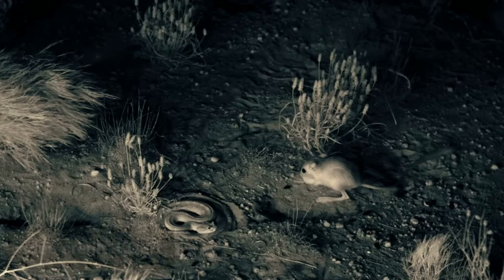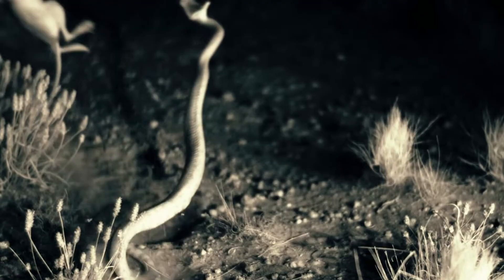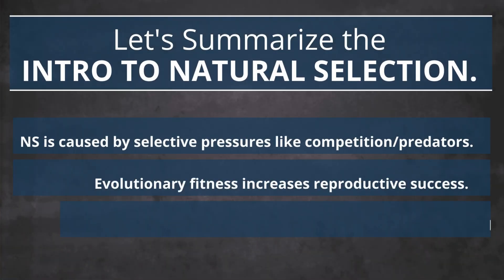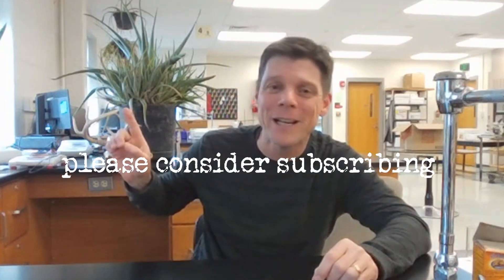Scientists have studied the genetics of fur color of rock pocket mice extensively, and we will do a number of activities throughout the year to explore how genetic variation in these animals can be selected in different generations as conditions in their habitat may change. The desert is a tough place to live, but thanks to natural selection driving the process of evolution, rock pocket mice and kangaroo rats have developed truly amazing adaptations including camouflage, jumping ability, feeding behaviors, and highly efficient kidneys — all of which increase their biological fitness by improving their chances of survival and reproductive success.